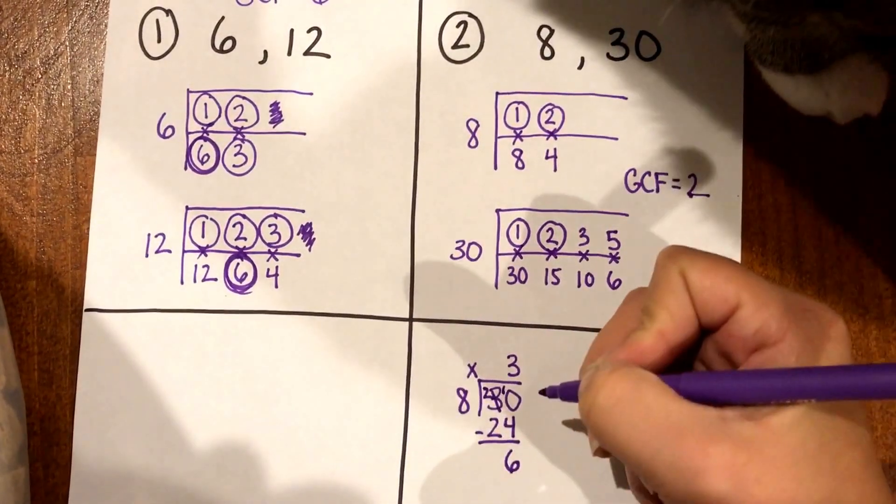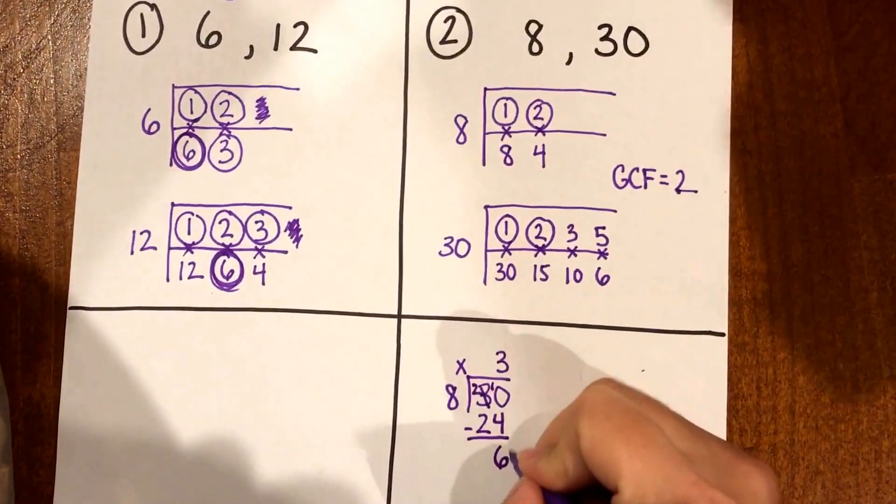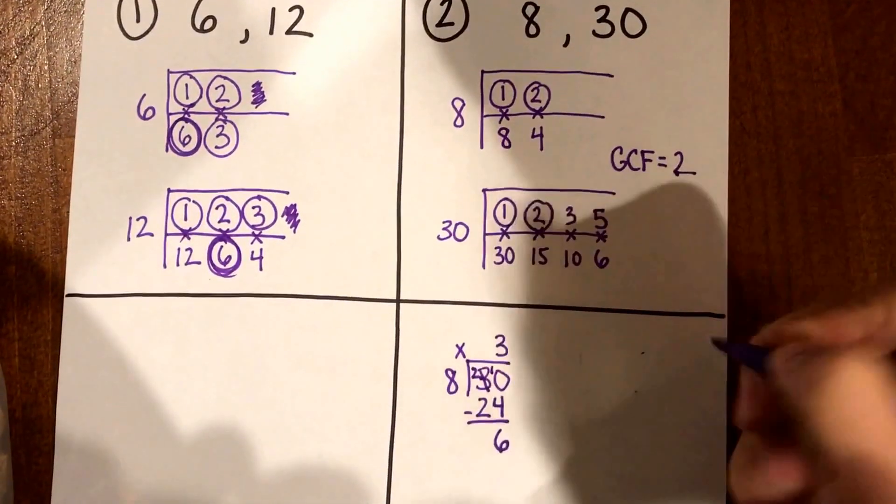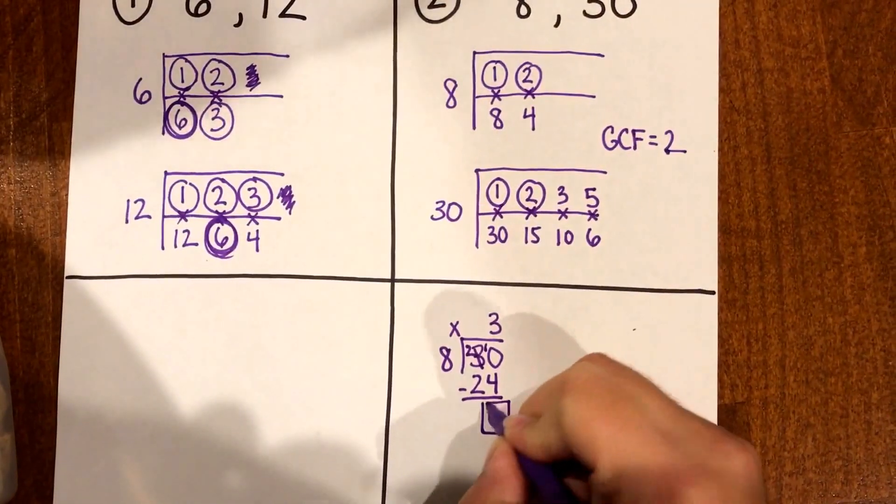And if I do borrow, 10 minus 4 is 6, 2 minus 2 is 0. So I have 6 as a remainder which means I need to keep going.